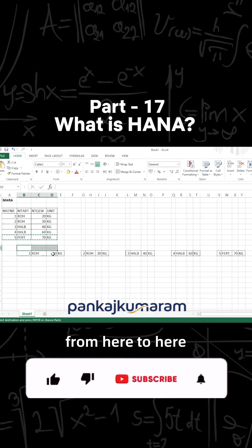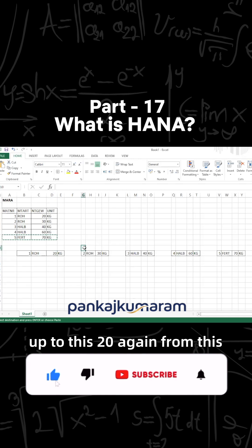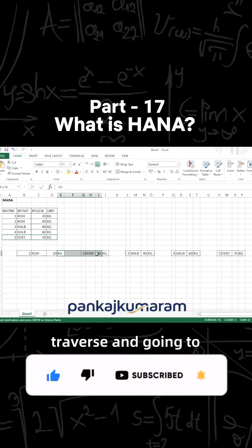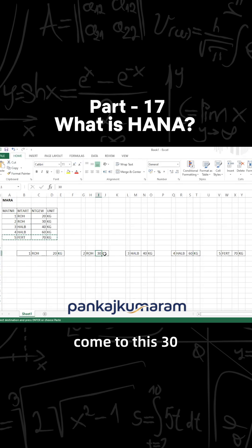Up to this 20, again from this 20 you are going to traverse and come to this 30, again traversing from kg3 halb and coming to 40. So like that you will have to traverse, so the program has to traverse from 20 to 30, 30 to 40, 40 to 60, and 60 to 70.